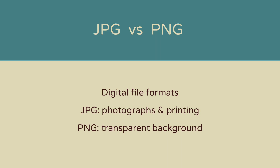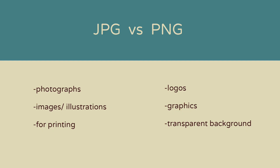JPEG and PNG are file formats — they're both good for digital use, so they're both okay if you're going to be viewing them online or on a screen. For printing, JPEG is usually the best option, but if you're printing somewhere more official, ask first because some places prefer PDFs. For printing at home, JPEG is probably the best bet. JPEG format is really good for photographs, drawings, or very detailed images, and PNG is good for line drawings, graphics, or anything with a transparent background.